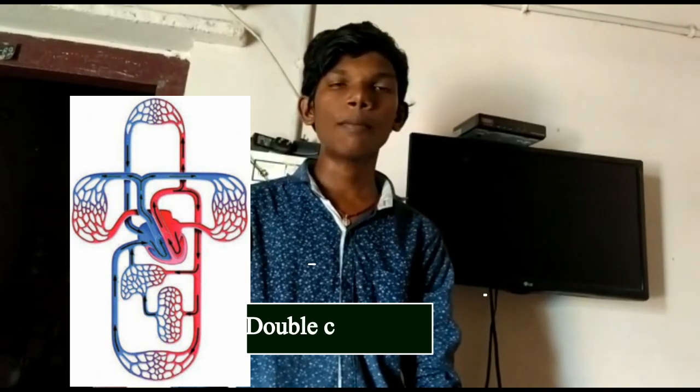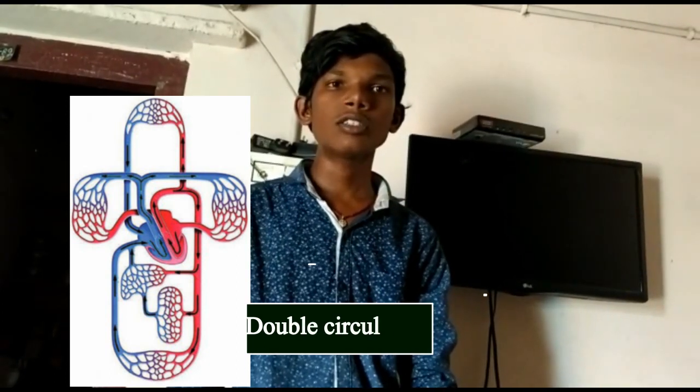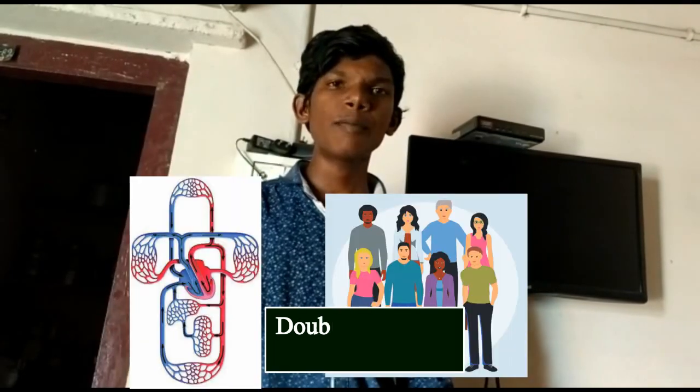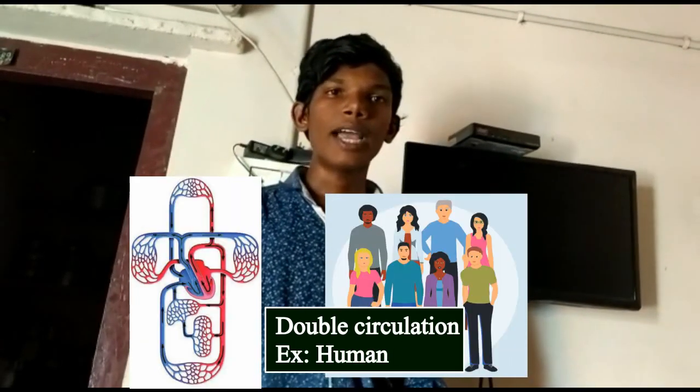Double circulation: the blood flows from the heart twice to complete one circulation. This is known as double circulation. Example: humans and animals.